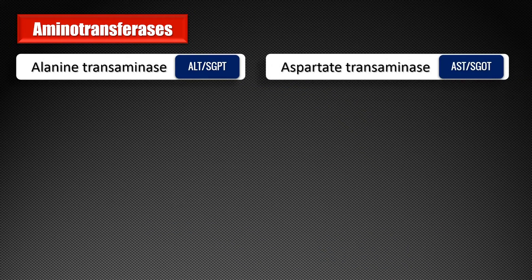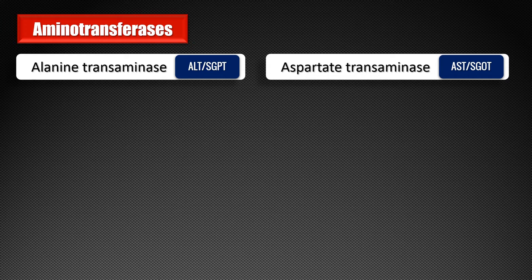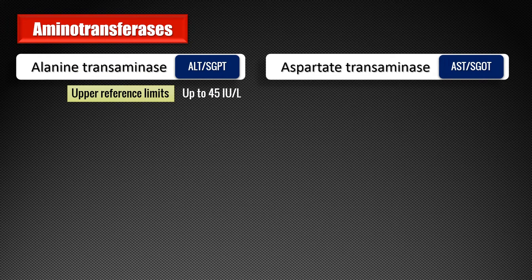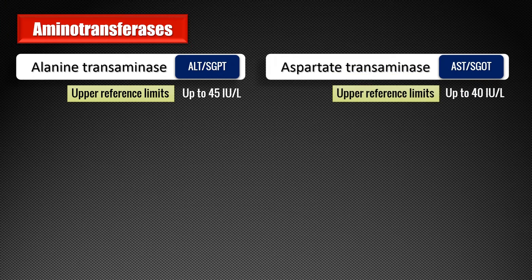Coming to aminotransferases or transaminases, there are two: AST and ALT. Although these two enzymes are expressed in many different organs or tissues, ALT is more specific for hepatobiliary disorders compared to AST. Together, their ratio and extent of elevation help in diagnosing many hepatobiliary disorders. The normal reference range for ALT is 10 to 45 international units per litre, and for AST it is about 10 to 40 international units per litre.